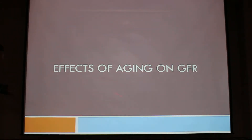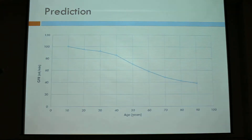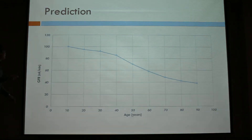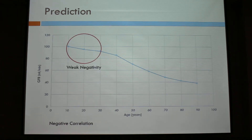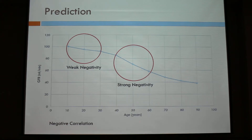Now I'm going to introduce some papers related to this topic — the effects of aging on GFR. Before we read these papers, we did some predictions. We predicted about the relationship between the GFR and age. We predicted that there would be a negative correlation between age and GFR, and secondly, that there would be a weak negativity in the ages of 10s and 20s, and a strong negativity in the ages of 40s and 50s.